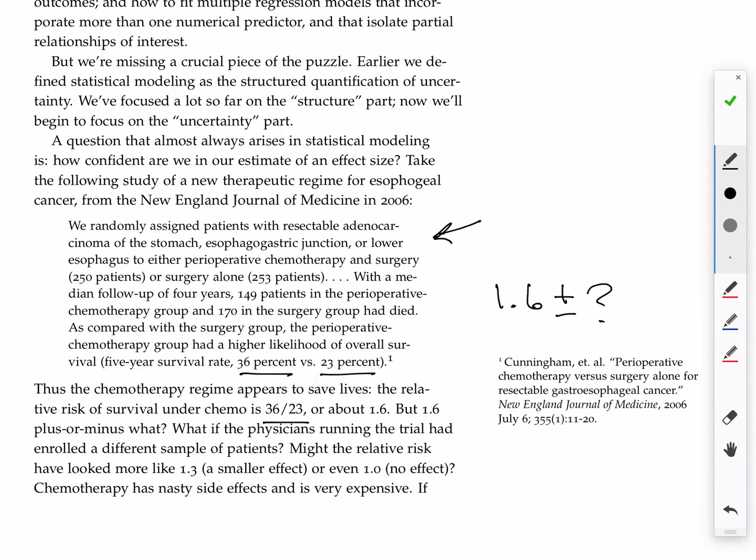If we'd had different subjects in this trial, a different group of 250 patients in the chemotherapy group, a different group of 253 patients in the control group, would we have gotten a different answer other than 1.6? You betcha, right?